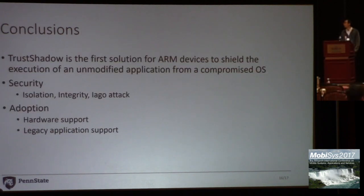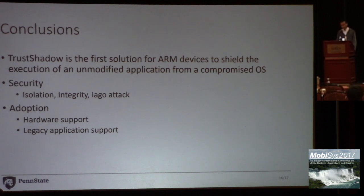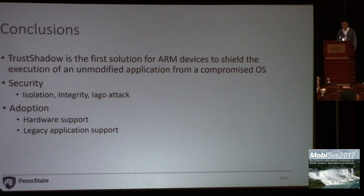To conclude, TrustShadow is the first solution for ARM devices to shield the execution of an application from a malicious operating system. We run the trusted application in isolation from the malicious operating system and ensure that it is loaded into memory correctly. In addition, we design our solution to be Iago attack resistant. More importantly, our solution can run on almost all popular ARM Cortex-A series devices, and without any recompilation, a legacy application can be protected instantly. Thank you.